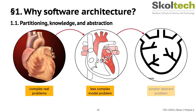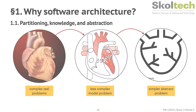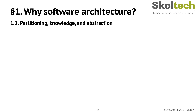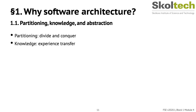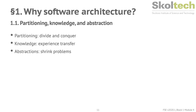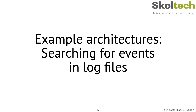Abstraction can effectively combat complexity and scale because it shrinks problems, and smaller problems are easier to reason about. Software architecture is one such weapon that helps address the complexity and scale of software systems. It helps to partition software, provides knowledge to design better software, and provides abstractions to help you reason about software.